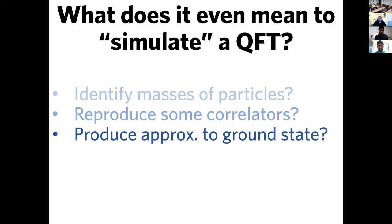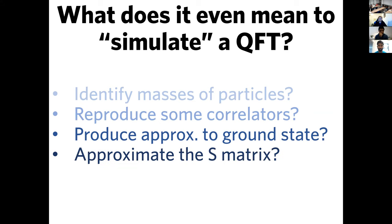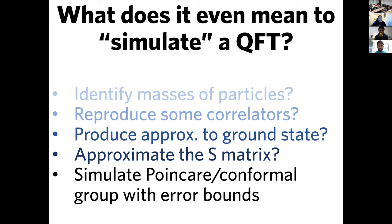You might say we want to reproduce some correlators or temporal correlation functions. Maybe a bit stronger: you want to produce an approximation to the ground state stored as a quantum state in the quantum computer. Or maybe you want to approximate the S-matrix, which tells you roughly speaking the long-time dynamics of the system — when you trace out the intermediate times of an interaction process. But there's something even stronger, and I'm going to argue this is the strongest way to interpret what it means to simulate QFT.